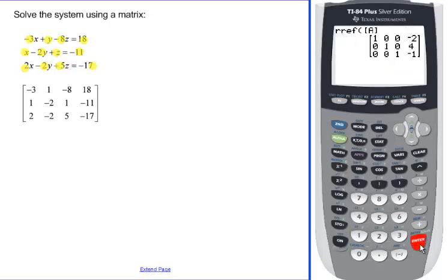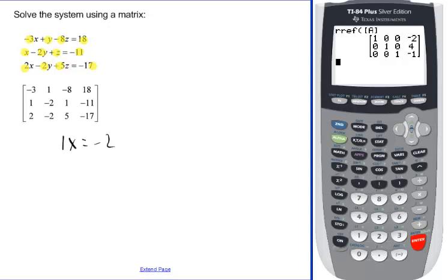And what happens is it gives us out an answer. And it's telling us that 1x equals negative 2. It's telling us that 1y equals 4. And it's telling us that 1z equals negative 1. And those are the solutions.